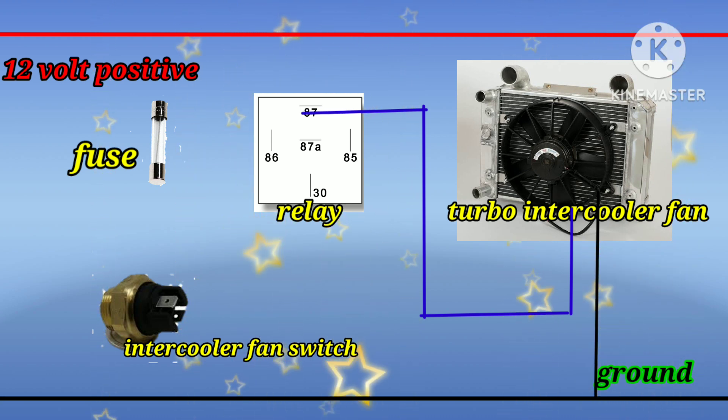We proceed to Intercooler Switch. Intercooler Switch has 2 wires, 1 for Ground and 1 for Number 85 of Relay.